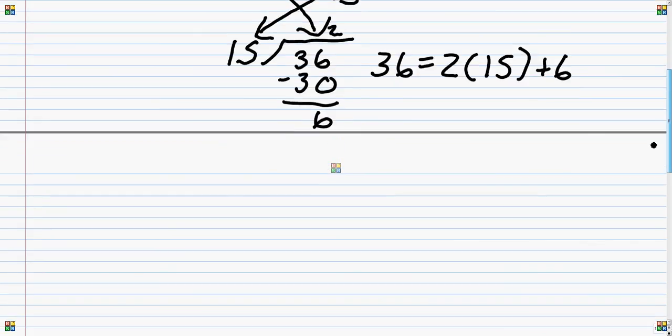And then you want to do the same thing. The divisor becomes the dividend, and the remainder becomes the divisor. So 6, see it just goes from there to there, and then divide by 15, which is right there.